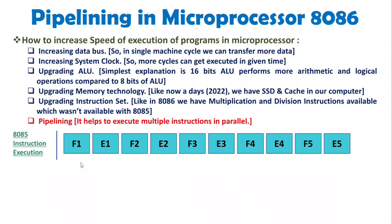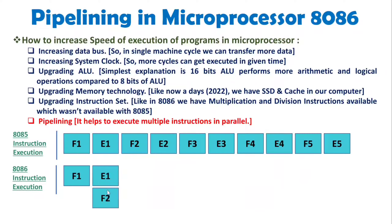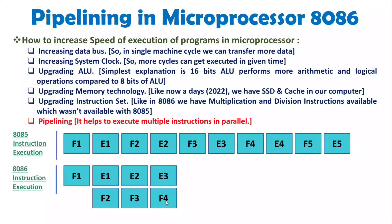Now, what will happen with 8086? With 8086, it fetches the first instruction, but when it executes that first instruction, in parallel it fetches the second instruction. When it executes the second, it fetches the third. When it executes the third, it fetches the fourth. When it executes the fourth, it fetches the fifth, and at last it executes the fifth. If you observe, the time required for 8086 compared to 8085 will be half. So here we are increasing speed significantly — that is the basic idea of pipelining.